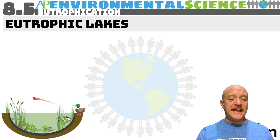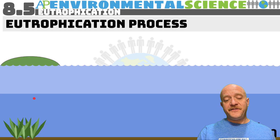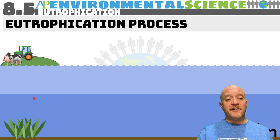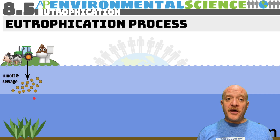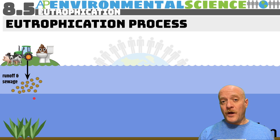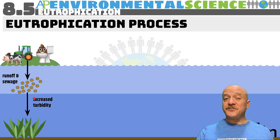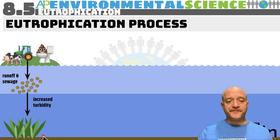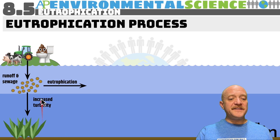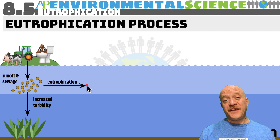The process of cultural eutrophication begins with sources like agriculture, CAFOs (livestock operations), human sewage, and wastewater treatment. These release runoff and sewage into a body of water, causing increased turbidity, which reduces photosynthesis for benthic plants — remember benthic means on the bottom. This runoff and sewage also contributes directly to eutrophication.